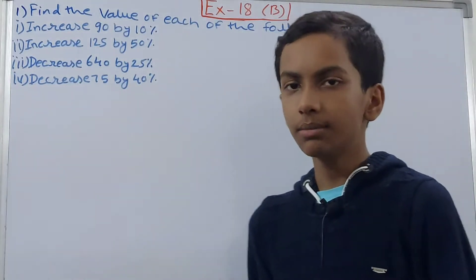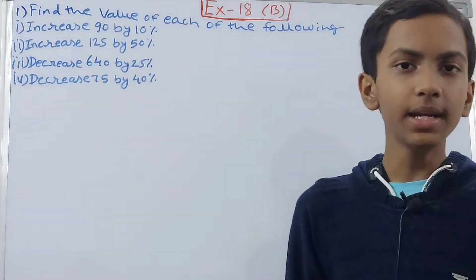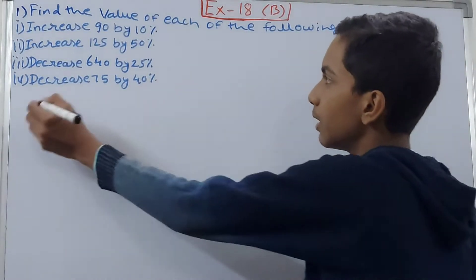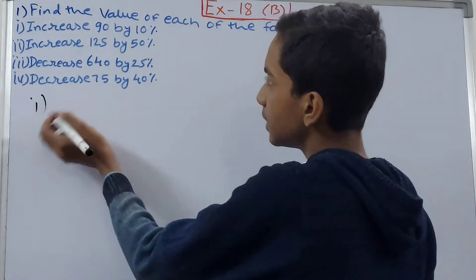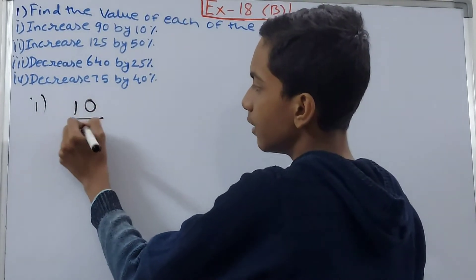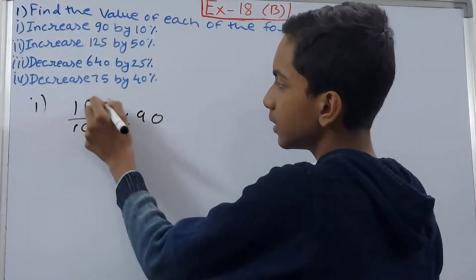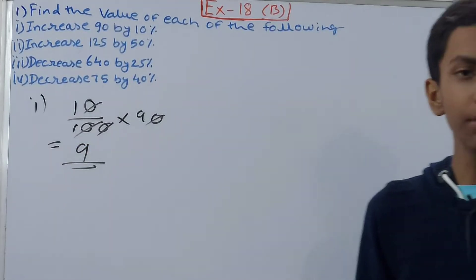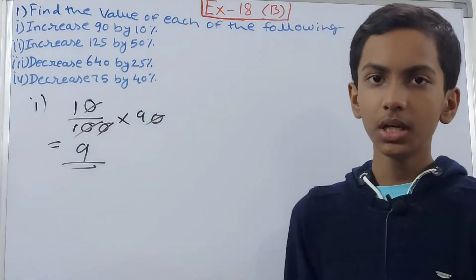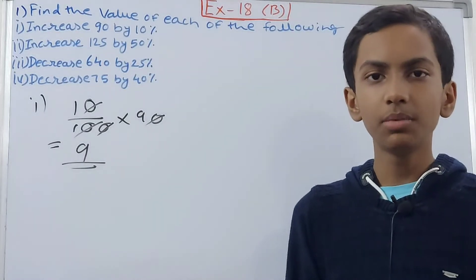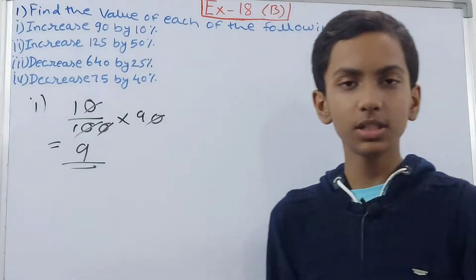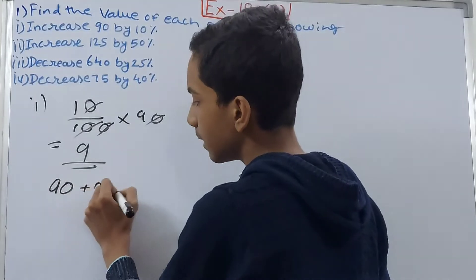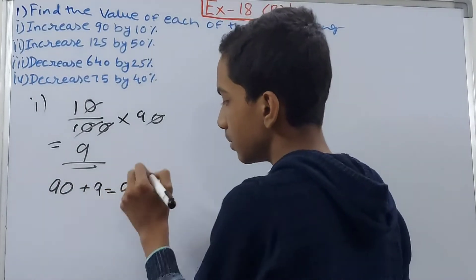First of all we need to find what will the value of 10% be out of 90. So you can write it here in the first part that 10% of 90 becomes 10 upon 100 into 90. Cancel this zero, cancel this one, this one gets cancelled, so 9 here. So this means that when we will increase 90 by 10%, the amount that will be increased will be 9. So 9 will be increased in 90, so we get 90 plus 9, that becomes 99. So this becomes your answer.